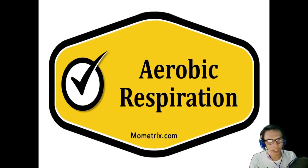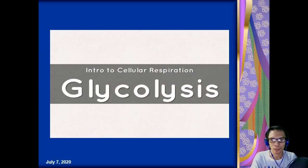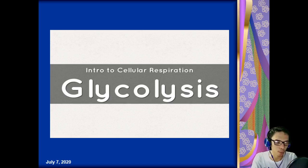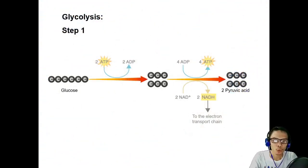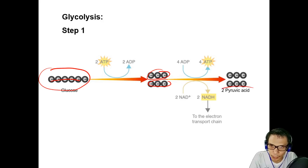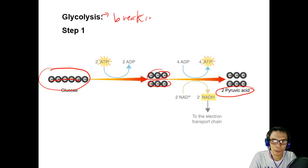Let's start with aerobic respiration. Aerobic respiration is a cellular respiration process that requires oxygen — without oxygen, it is not called aerobic respiration. The first step is glycolysis. Looking at the diagram, the glucose goes from a six-carbon chain and becomes two three-carbon chains. The glucose is broken down into pyruvic acid. Glycolysis means the breaking down of glucose.